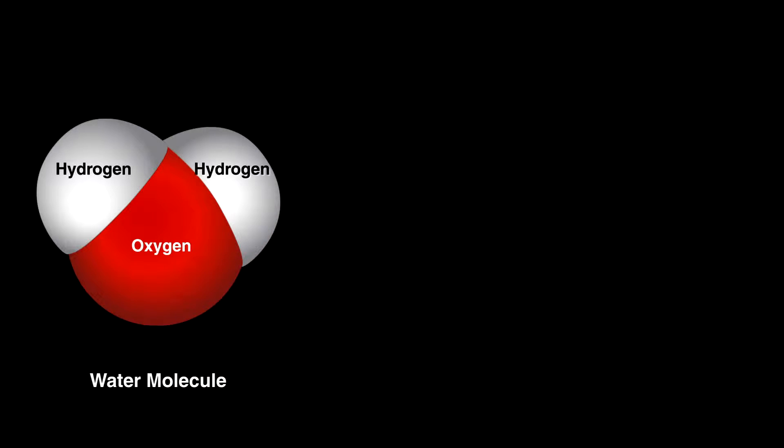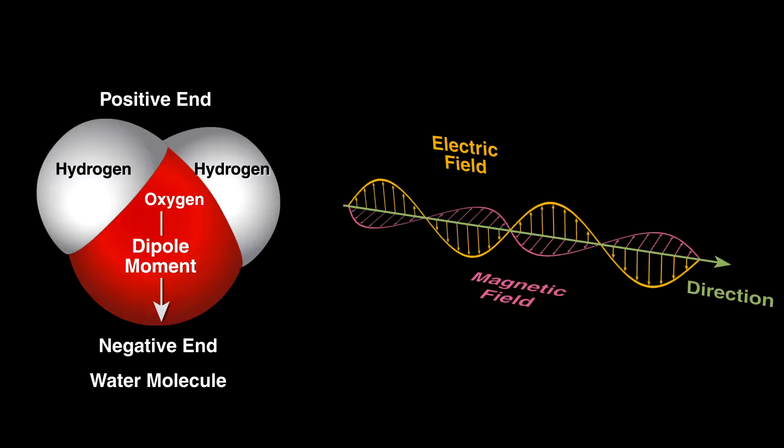Well, our food is filled with water, which is positively charged at one end and negative at the other. To give these molecules more energy, we expose it to electromagnetic waves that emanate from the tube.